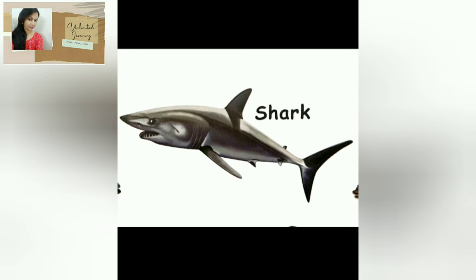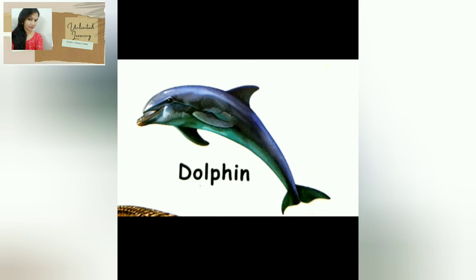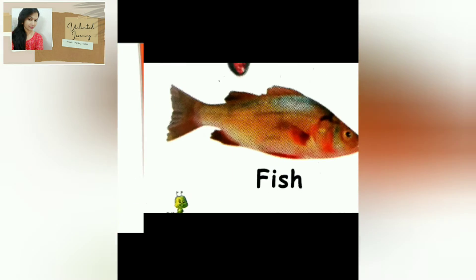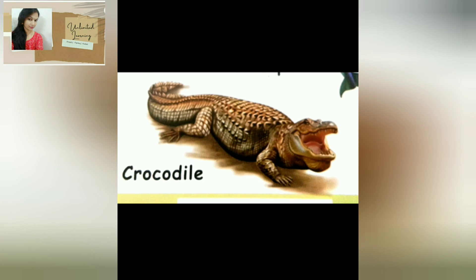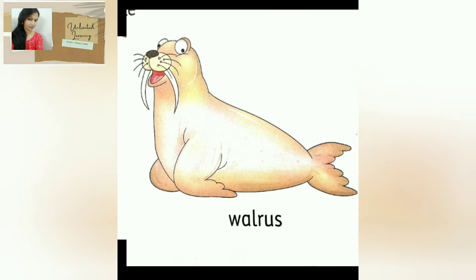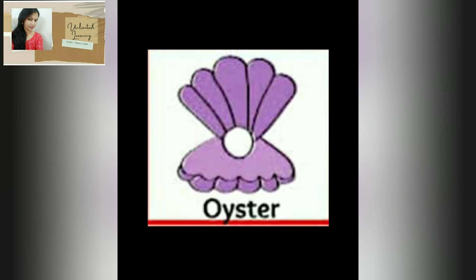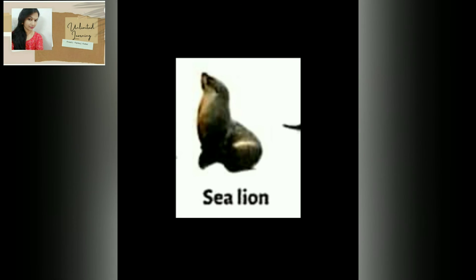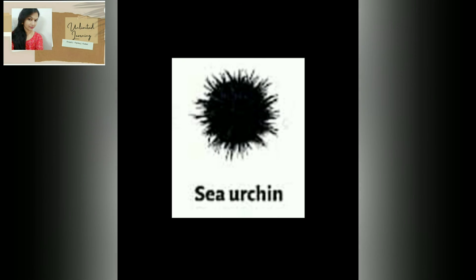Angelfish, clownfish, shark, whale, dolphin, turtle, seal, frog, crab, octopus, fish, starfish, eel, crocodile, snail, walrus, oyster, clam, tuna, coral, seagull, sturgeon, sea lion, sea urchin.